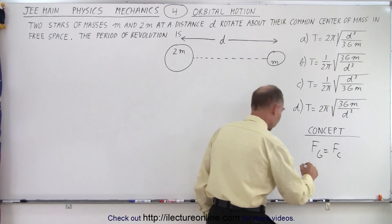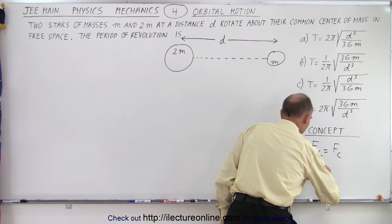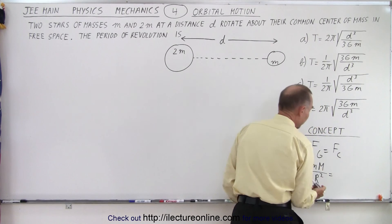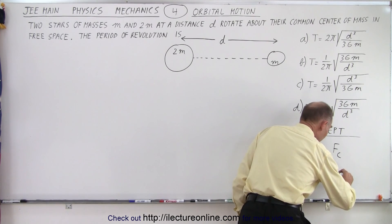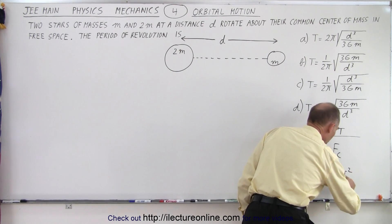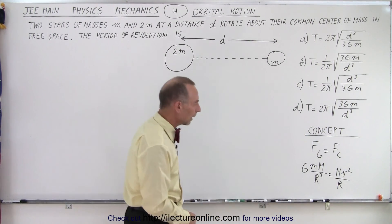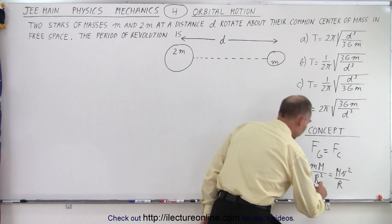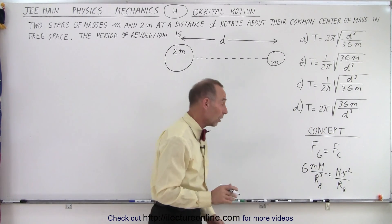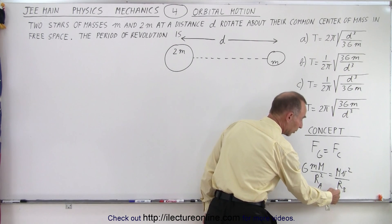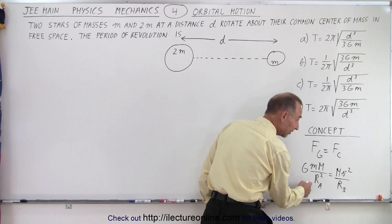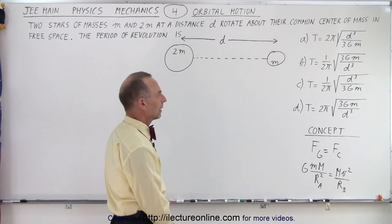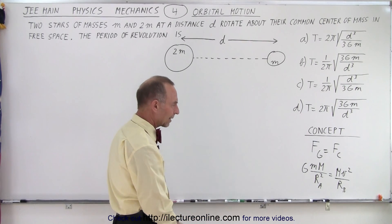The general equation is G times little m times big M over the distance squared equals the centripetal force — which, depending on which mass we're dealing with, would be m*v² over r. Now, those may not be the same r's, so let's call them rA and rB. The radius of circular motion is different from the distance between the two objects causing the gravitational force.